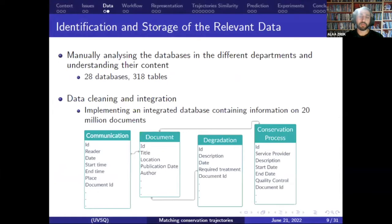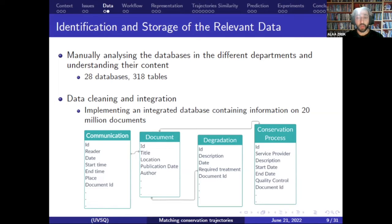We started this work by manually analyzing the databases of all departments at the BNF to understand the information they describe and identify which information is related to the document's physical state. After the database analysis, we selected all available data related to the document's physical state. The selected data describes the conservation processes, the degradations, and the communication of the documents to the readers. We then implemented an integrated database containing this data.